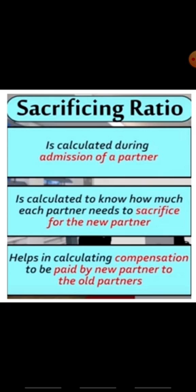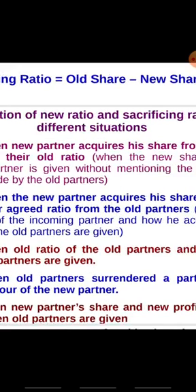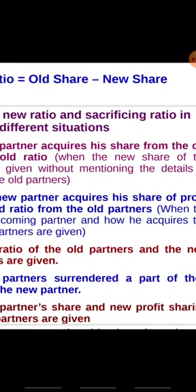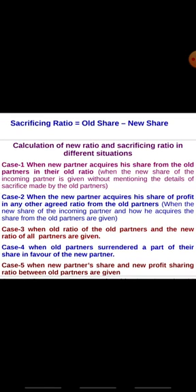When the new partner is admitted, the sacrificing ratio helps determine how much each prevailing partner will be sacrificing, and it helps calculate the compensation to be paid by the new partner to the old partners. When the new partner brings in goodwill, that goodwill is divided among the prevailing partners — that is the compensation. Sacrificing ratio is calculated by the formula: Old Ratio minus New Ratio.